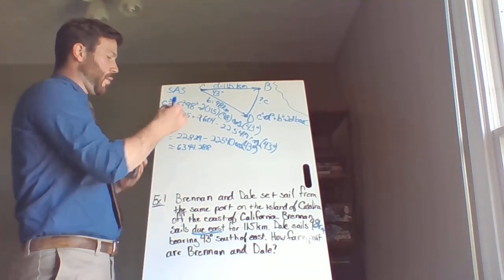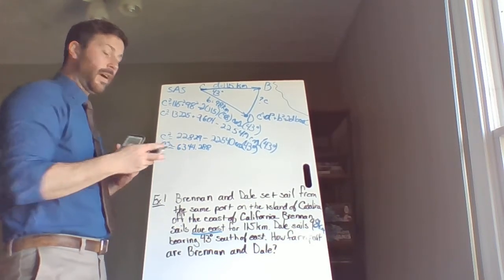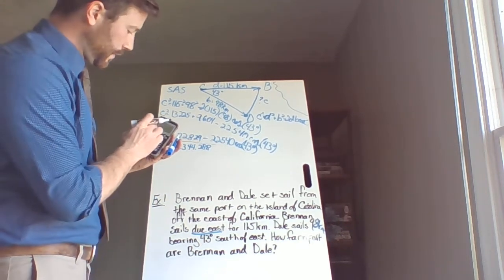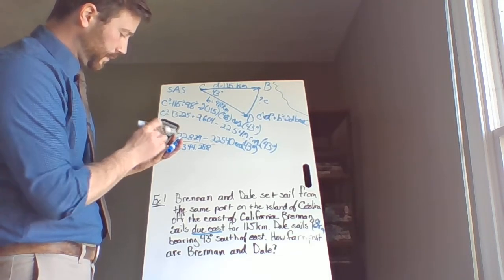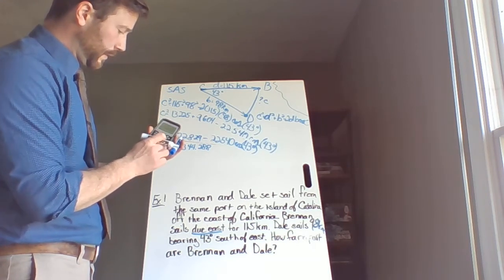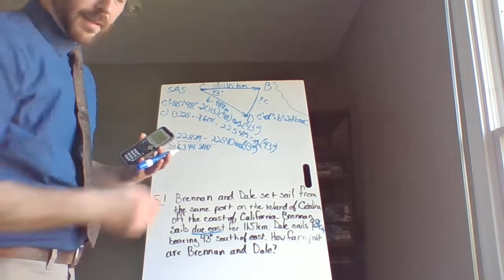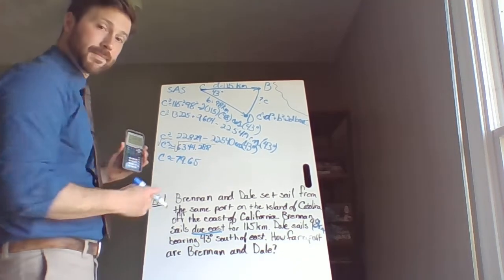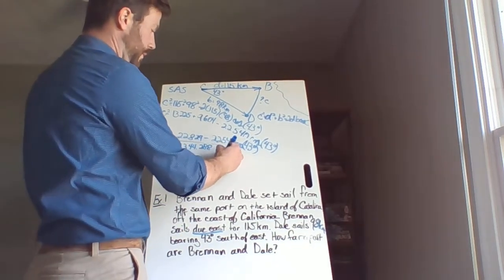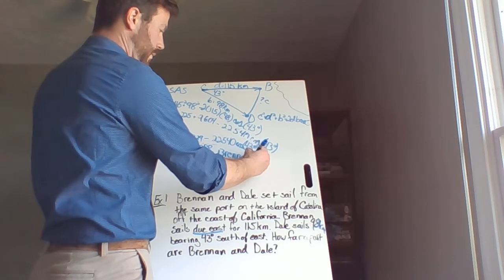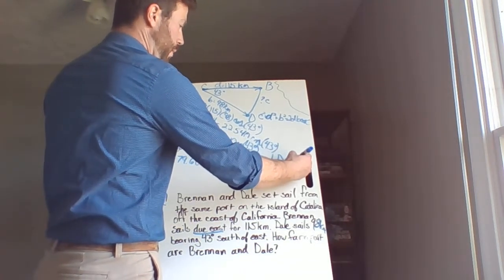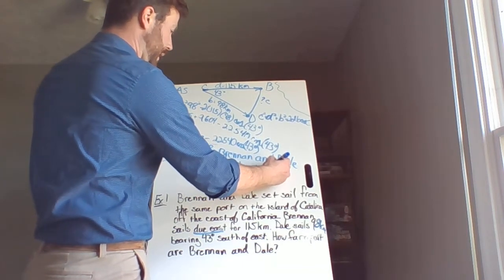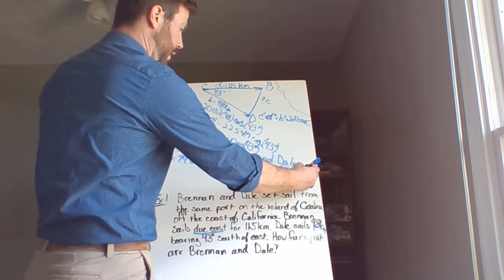And I get approximately 6,344.288. Now this is C squared. If I want C all by itself, I need to take the square root on each side. So take that answer, take the square root, and we get approximately 79.65. So we can say Brennan and Dale are about 79.65 kilometers apart.